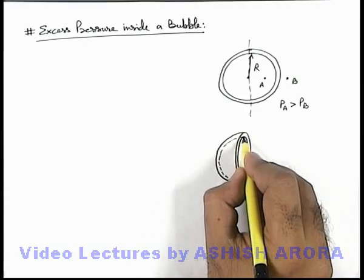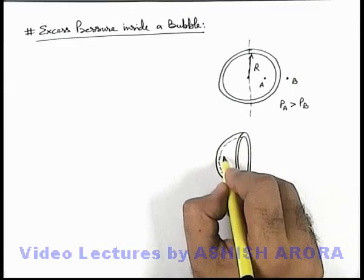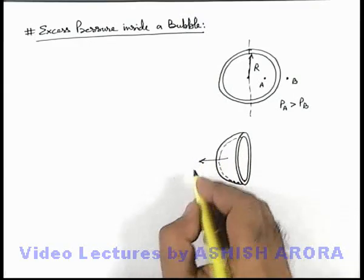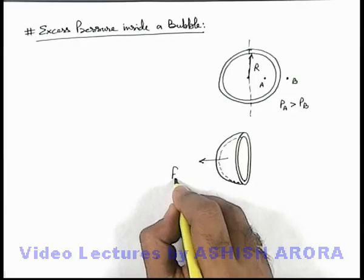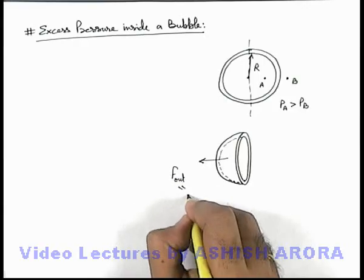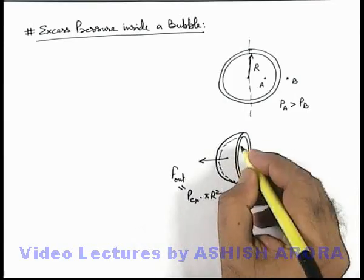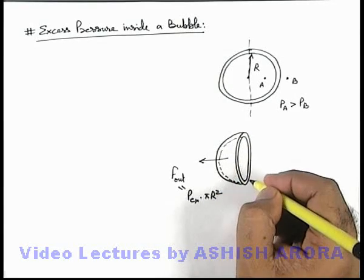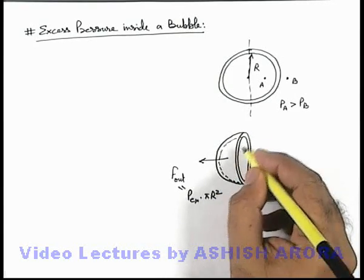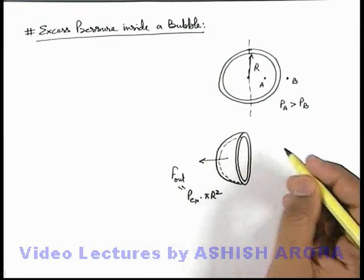And in this situation we can say the right part will exert a force on it in outward direction due to excess pressure. And this outward force can be simply written as excess pressure multiplied by the surface area which is πr², that is the area of this hemispherical base, which is πr².